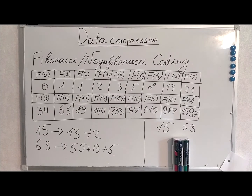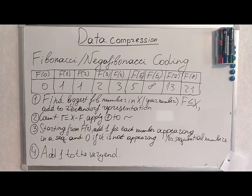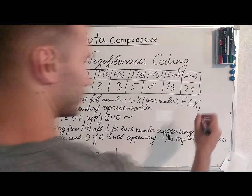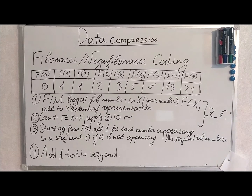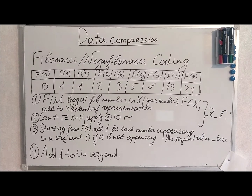These other examples are fairly easy — I think you can work them out yourself. Now that you have a grasp of Zeckendorf representation, here is the formal definition of the Fibonacci and Nega-Fibonacci encoding scheme. The first two steps are Zeckendorf representation. Then, starting from F2, add a 1 for each Fibonacci number appearing in the decomposition and a 0 if it is not. Finally, add a 1 to the very end.